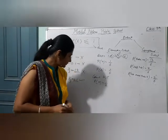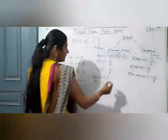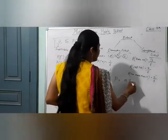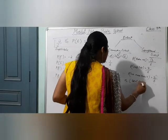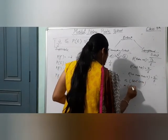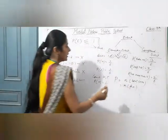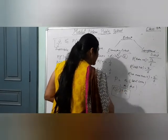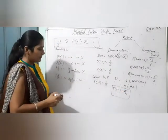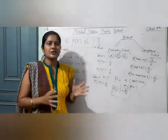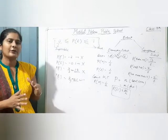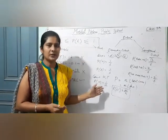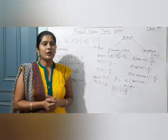आपका बस probability का formula रहा है. Probability का formula — अगर हमारे पास total number of cases N हैं, उसमें से M events ऐसे हैं जो favorable हैं, मतलब हमें चाहिए, तो probability उस event की होगी M by N, and this will be the probability. So this completes the introduction of probability. I hope आपको समझ आए होंगे different terms probability से related, what is probability. तो एक बार यहाँ तक इसको revise कीजिए अच्छे से, then we will move on to the exercise. Thanks.